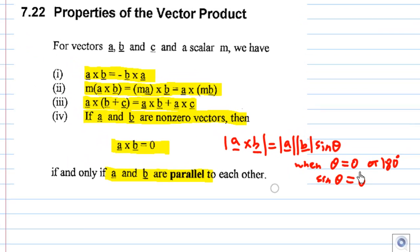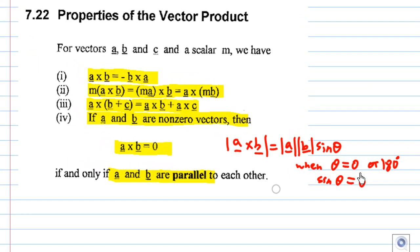And then we will have a cross b equal to zero. And that is why we say when a cross b equals zero and a and b are non-zero vectors, then a and b must be parallel to each other.